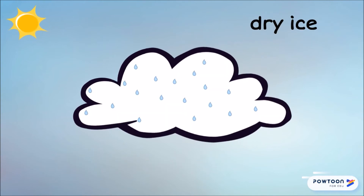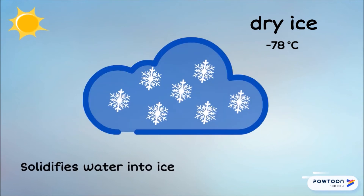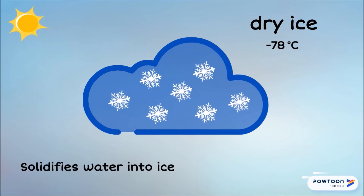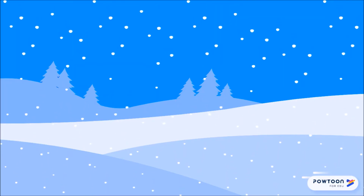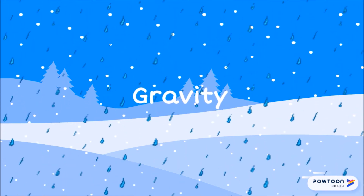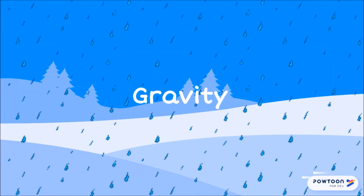The temperature of dry ice is minus 78 Celsius. Spreading it in a cold cloud will rapidly reduce the temperature, transforming super-cooled water into ice. These ice crystals grow heavier and fall to the Earth due to gravity as snow or rain.